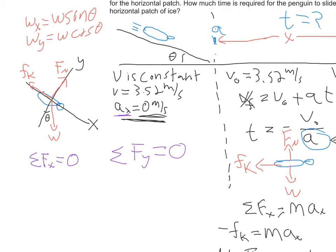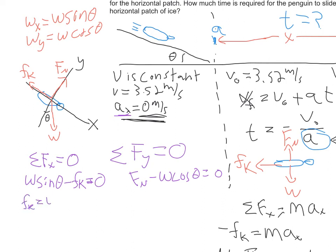Now we can sum our forces. In the x direction, we have wx (w times sine theta) in the positive direction and the force of kinetic friction in the negative direction, summing to zero. In the y direction, we have the normal force in the positive direction and w cosine theta in the negative direction, summing to zero. So, the force of kinetic friction equals weight times sine theta, and normal force equals weight times cosine theta.